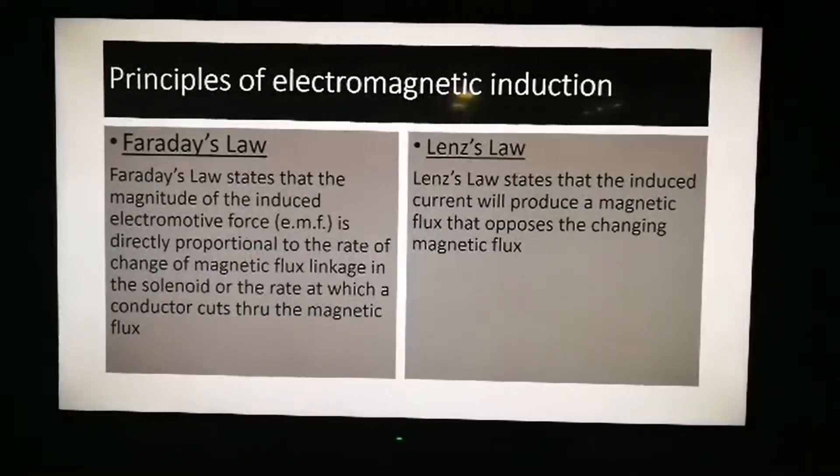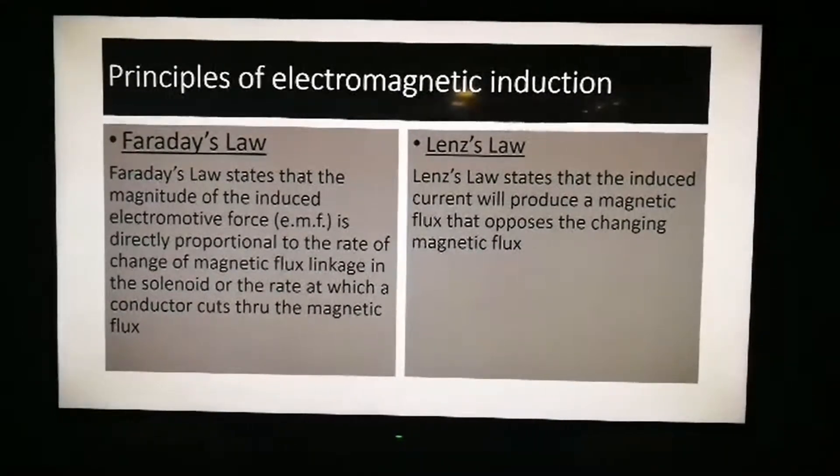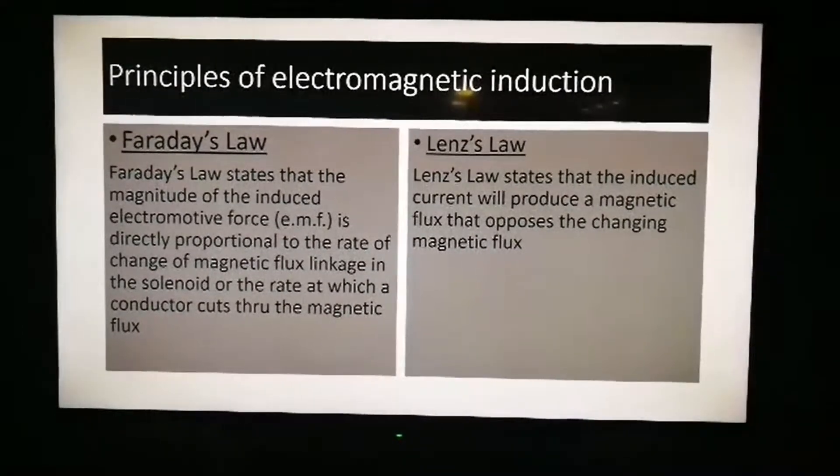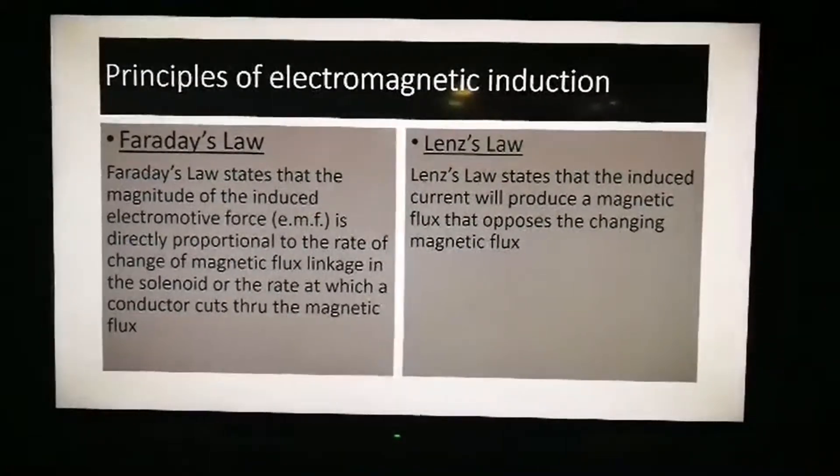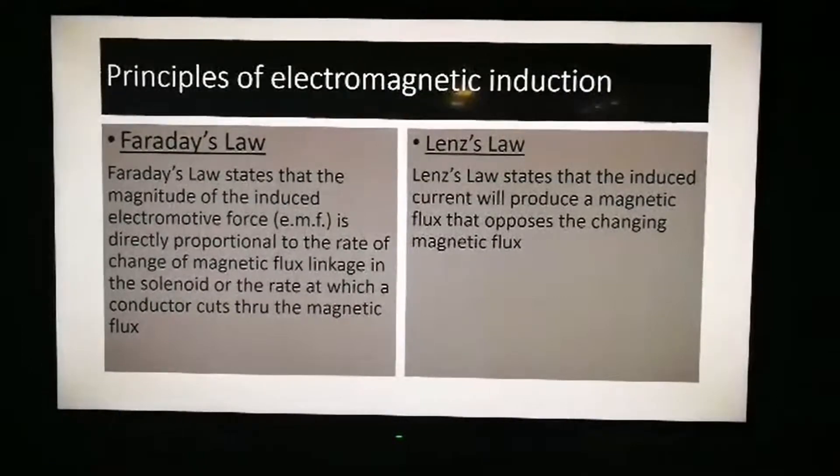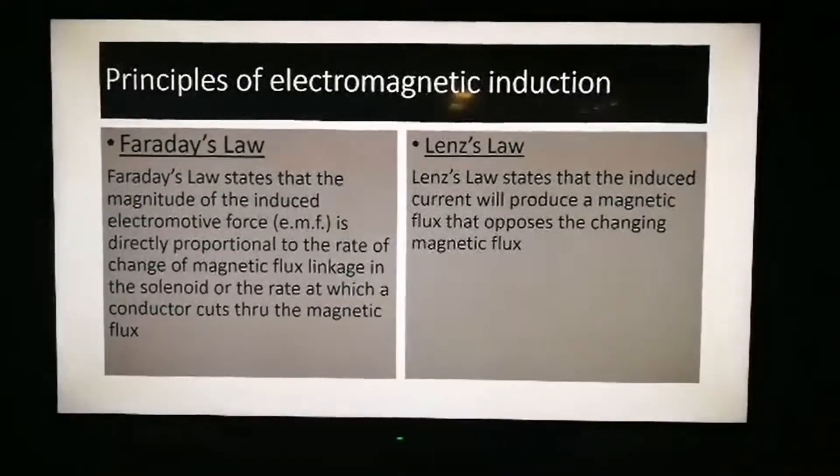Hence, the induced current is increased when a stronger magnet is used, the speed of relative motion is increased, and the induced EMF increases when the number of turns increases, because an EMF is induced in each coil of wire.